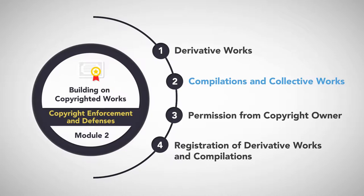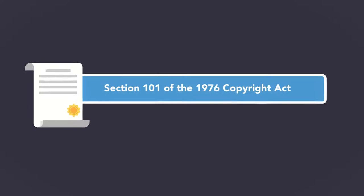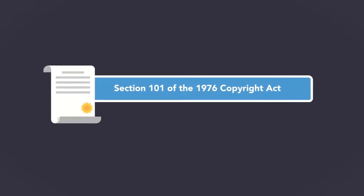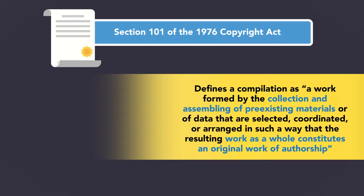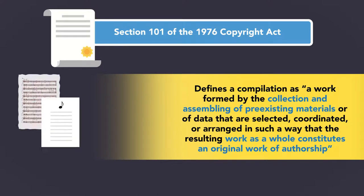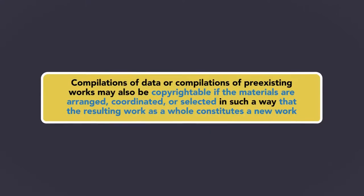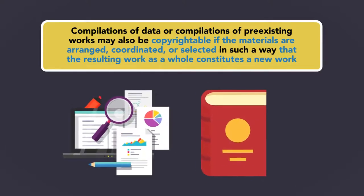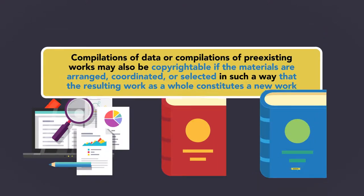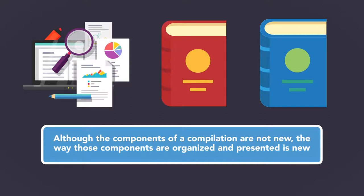Compilations and Collective Works. Section 101 of the 1976 Copyright Act defines a compilation as a work formed by the collection and assembling of pre-existing materials or of data that are selected, coordinated, or arranged in such a way that the resulting work as a whole constitutes an original work of authorship. Compilations of data or compilations of pre-existing works may also be copyrightable if the materials are arranged, coordinated, or selected in such a way that the resulting work as a whole constitutes a new work. Although the components of a compilation are not new, the way those components are organized and presented is new.